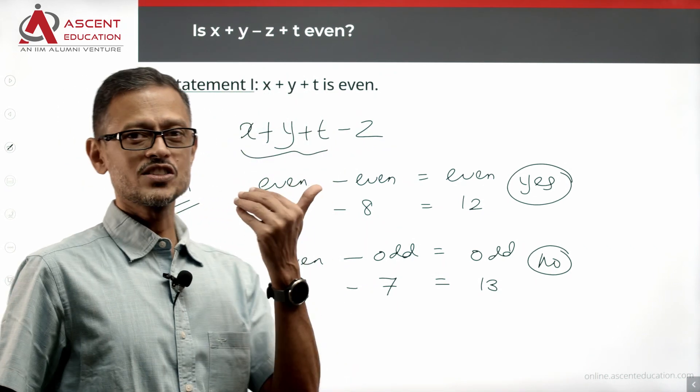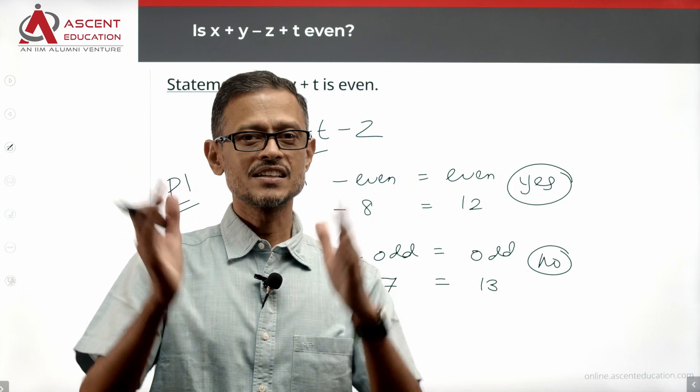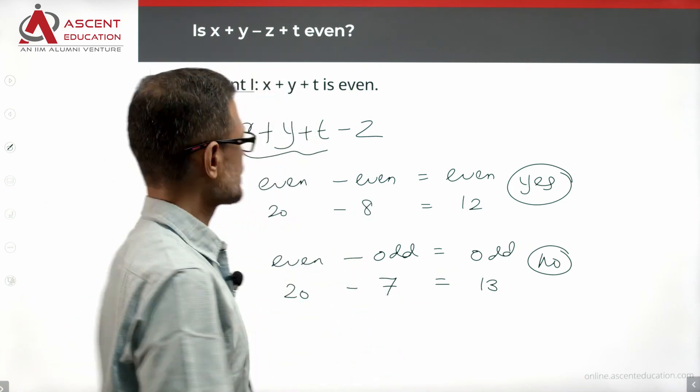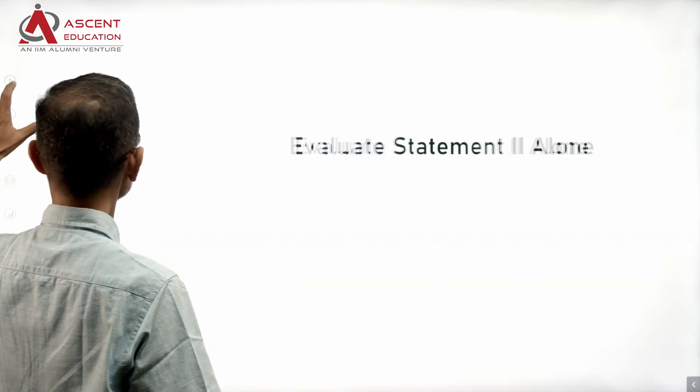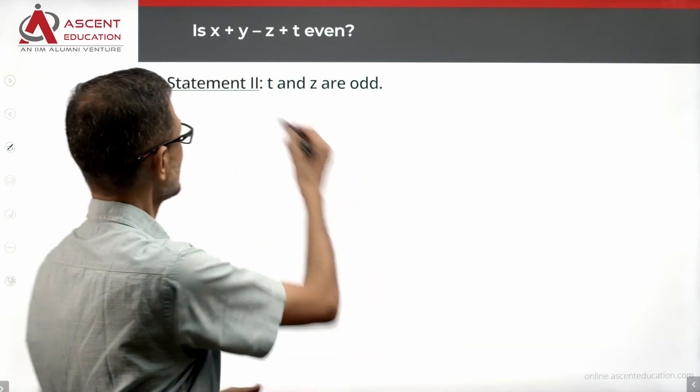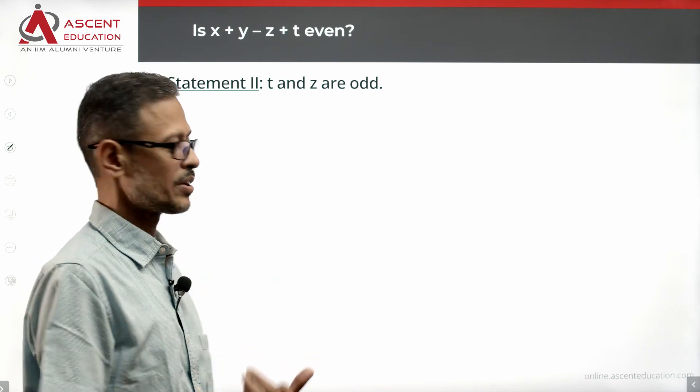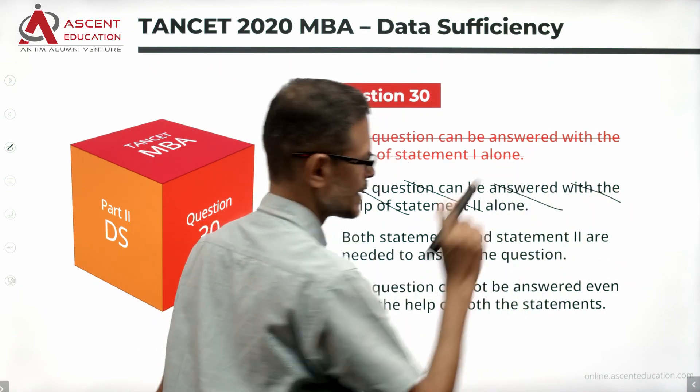So knowing only x plus y plus t, we will not be able to answer whether the final result is even or not even. Statement one alone is therefore not sufficient. Quickly eliminate answer option A, we'll look at statement two alone. T and Z are odd. Wonderful. We don't even have to look at anything beyond that. There's nothing about X and Y. Statement two is not sufficient. Answer option B we can eliminate.